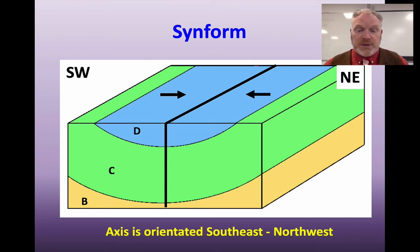The axis for this particular fold is oriented south-east to north-west. The axis is always at right angles to the dip, certainly at GCSE. The dip direction there also shows us the stress that makes these folds, which again will be at right angles to the axis.